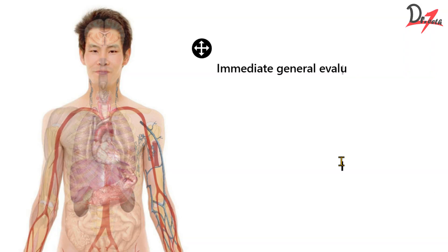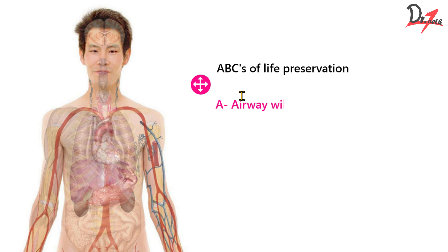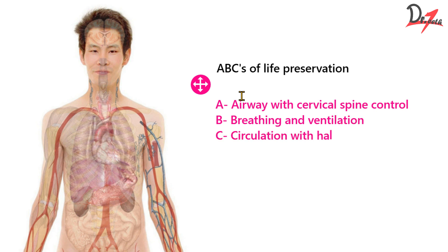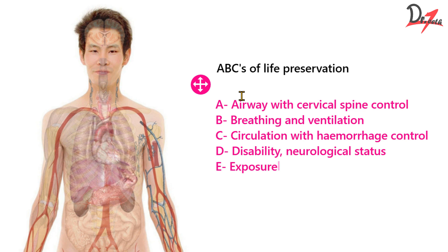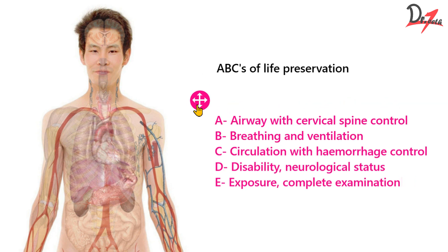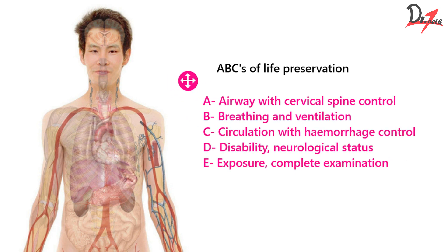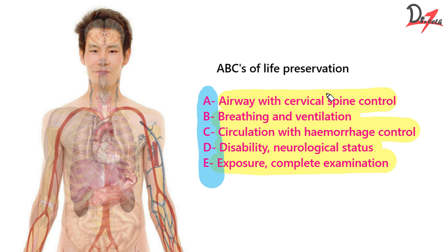Now let us talk about the ABCs of trauma. A is airway with cervical spine control. B is breathing and ventilation. C is circulation with hemorrhage control. D is disability — neurological status. E is exposure — complete examination of the patient. These are the ABCs of life preservation. In this video, we will be covering A and B, and in the next video we will cover C, D, and E.